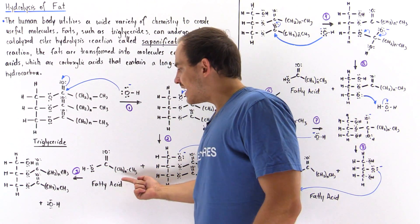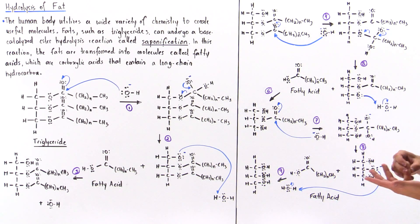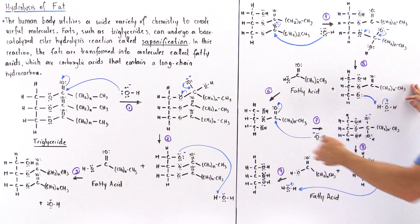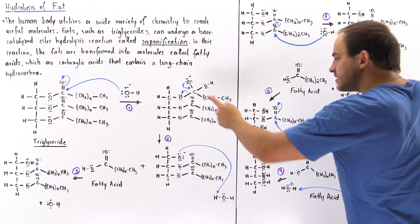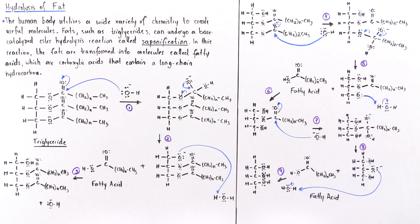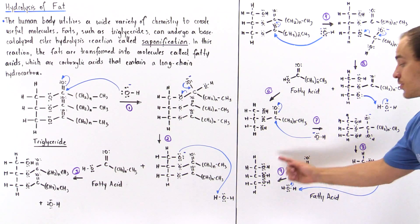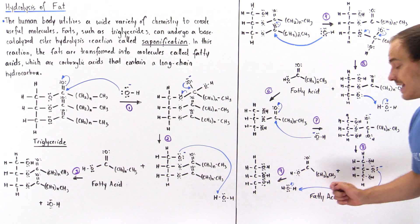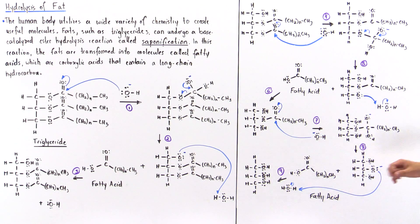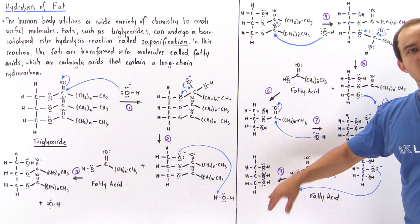In step six, identical to step three, we use either hydronium or water to protonate this oxygen, removing the negative charge. We then repeat the next series of three steps: hydroxide attacks this carbon nucleophilically, displacing the pi bond onto this oxygen; the double bond reforms, producing our third and final fatty acid. In the final step, we protonate this oxygen once more to form the glycerol molecule.